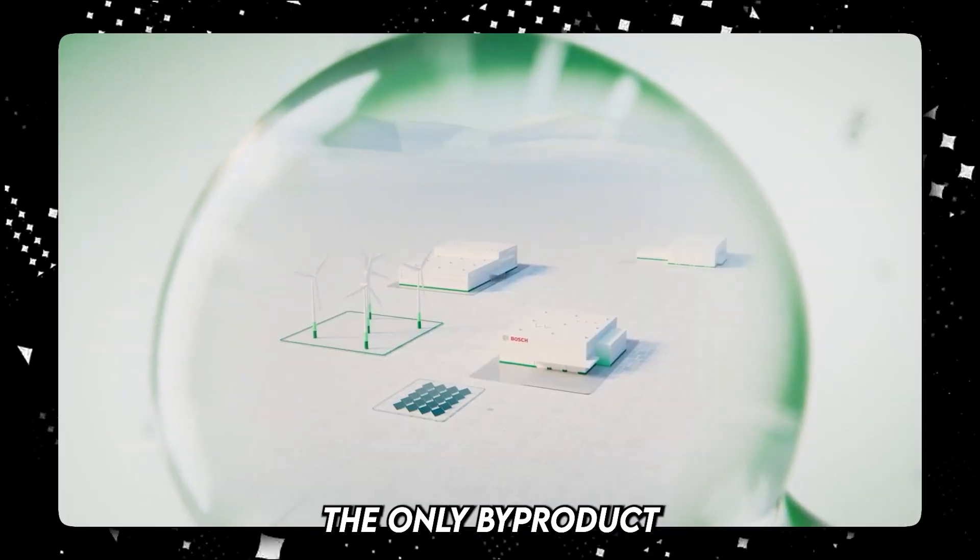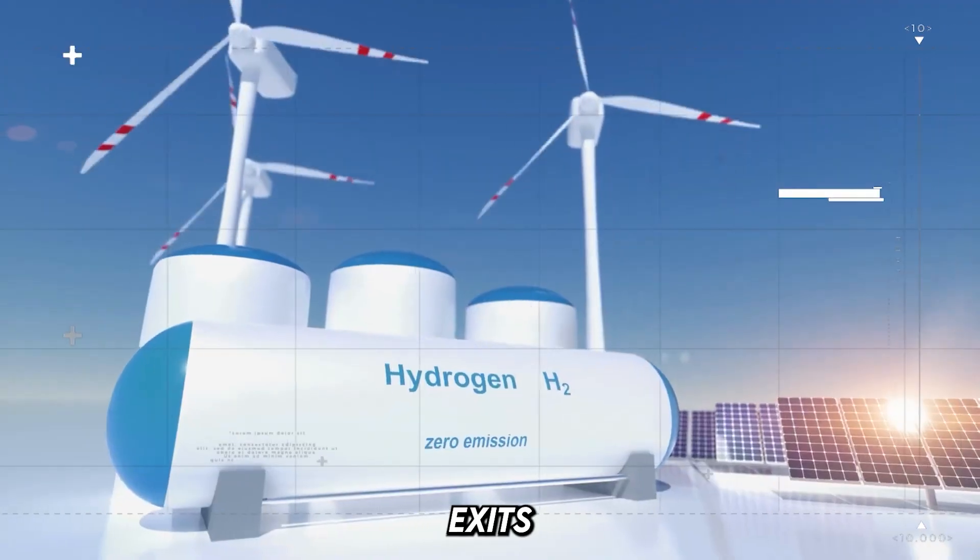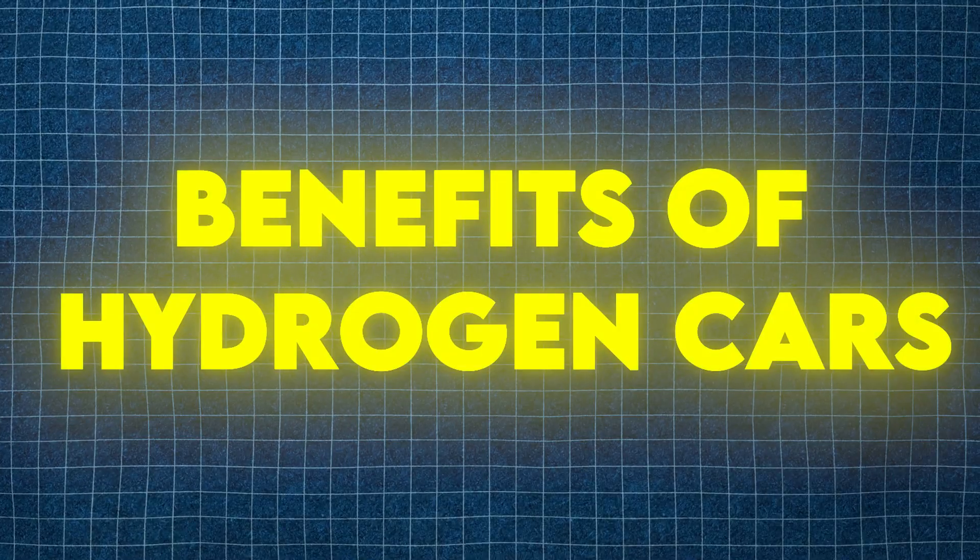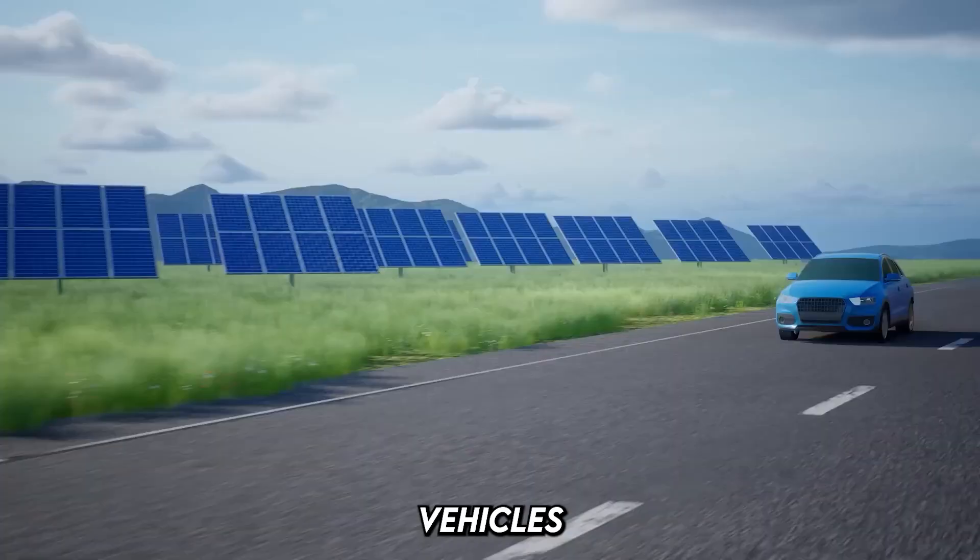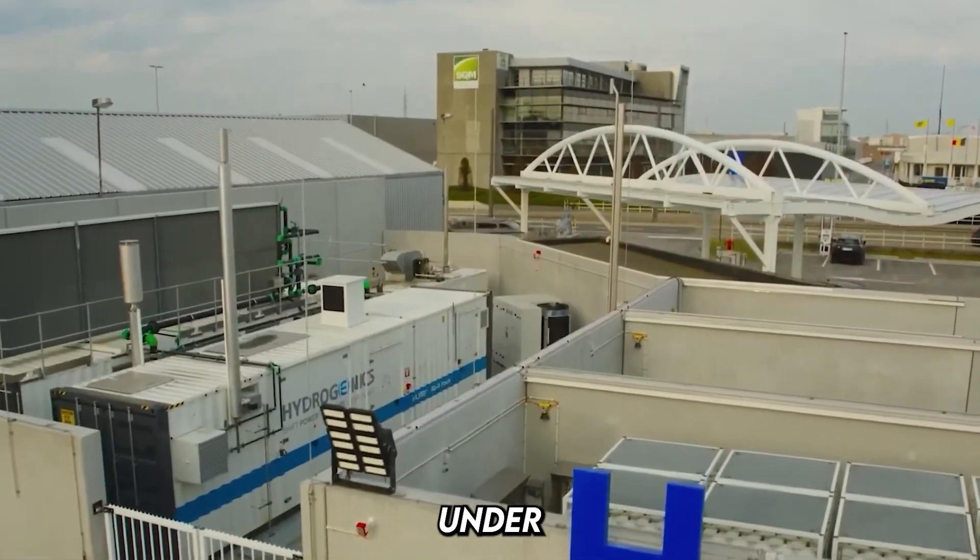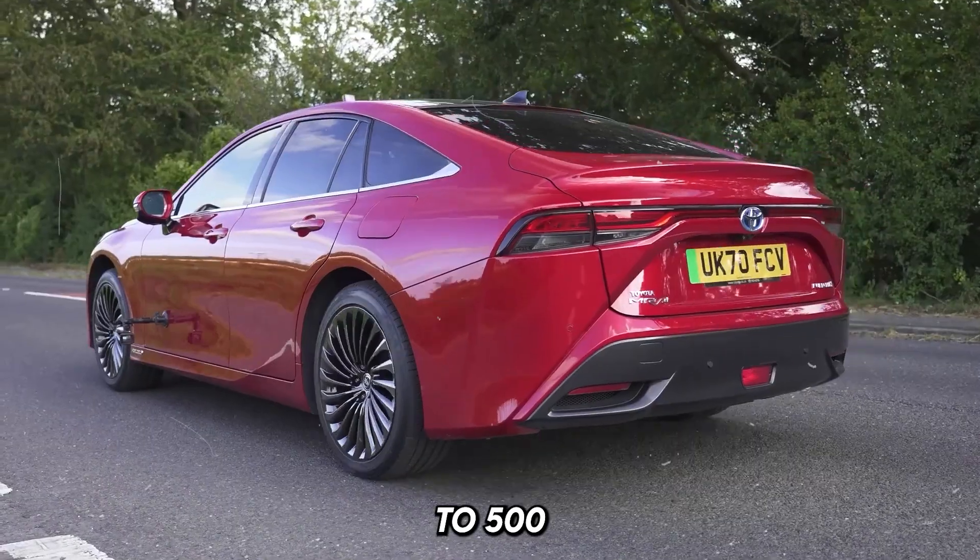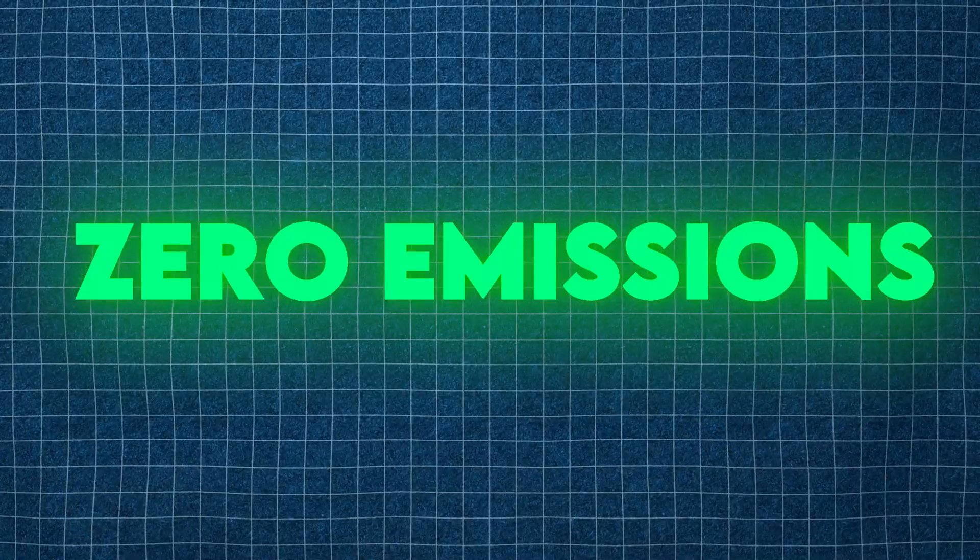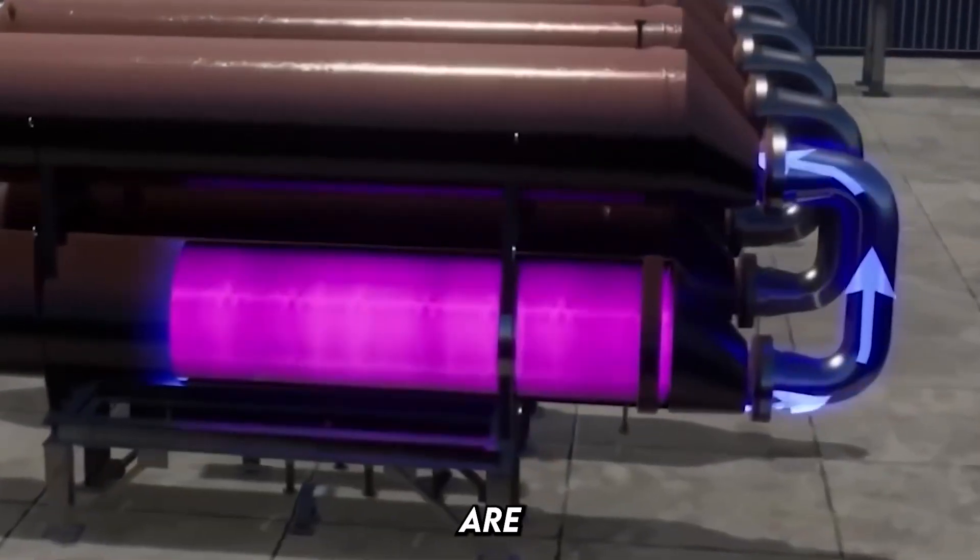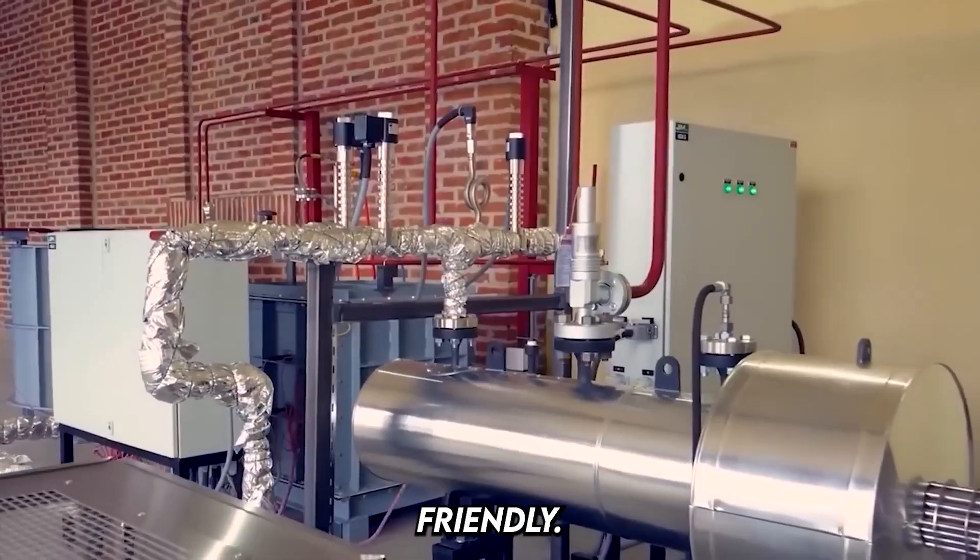Emission: The only by-product is water, which exits as vapor. Benefits of hydrogen cars: Unlike electric vehicles that require hours to charge, hydrogen cars can be refueled in under 5 minutes. Long range - they can travel up to 400 to 500 miles on a single tank. Zero emissions - no harmful gases are released, making them environmentally friendly.